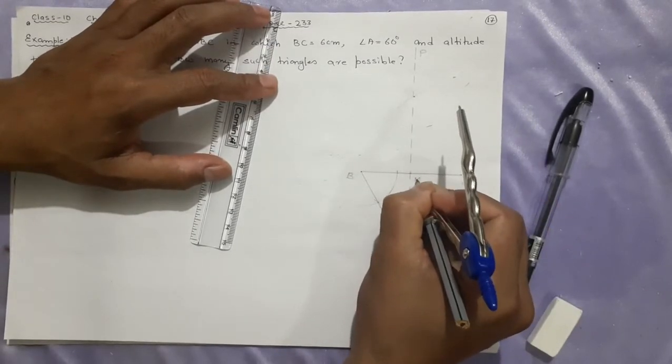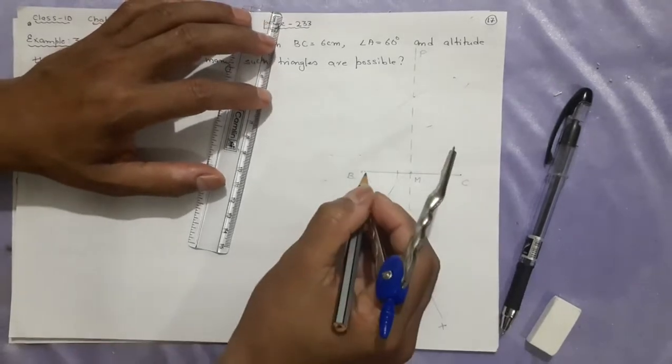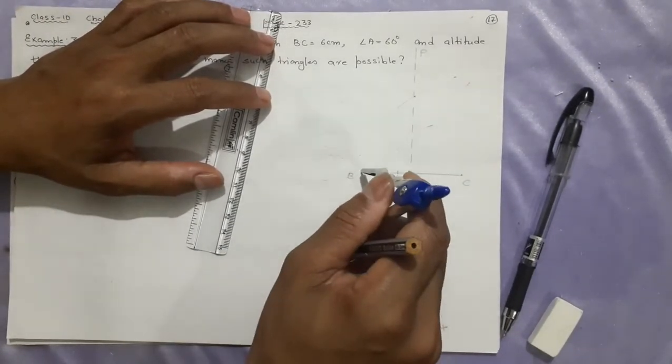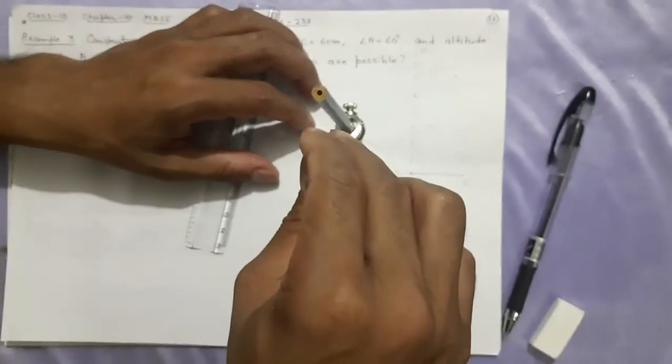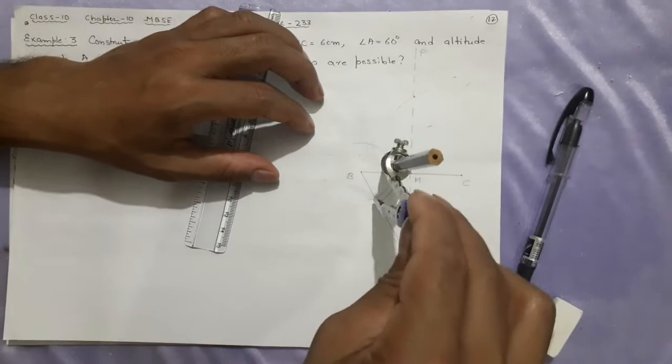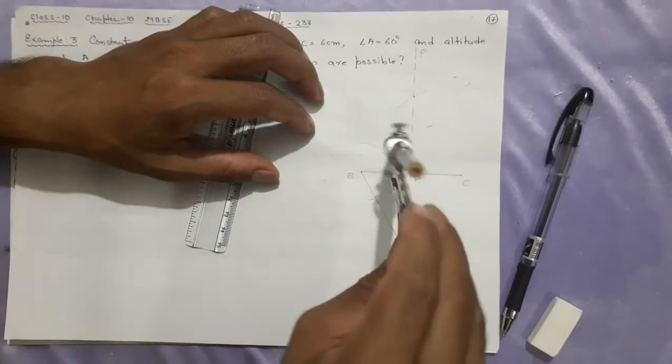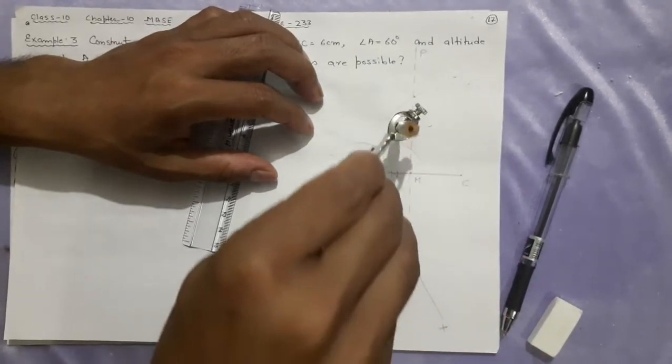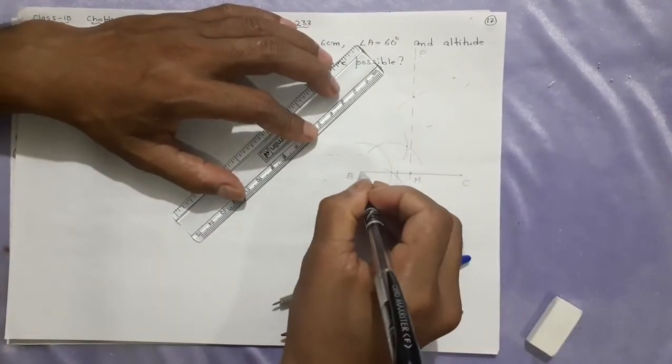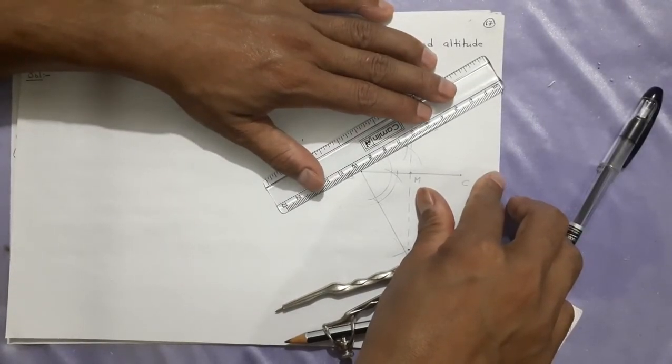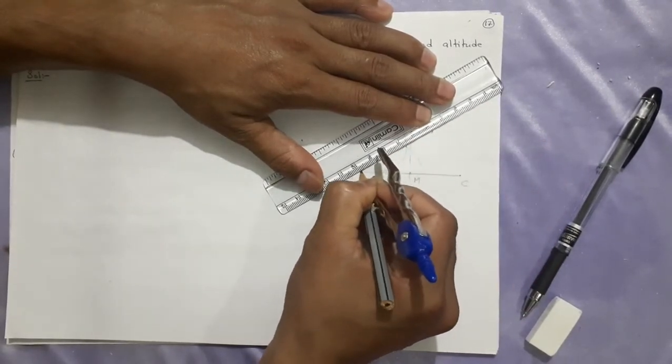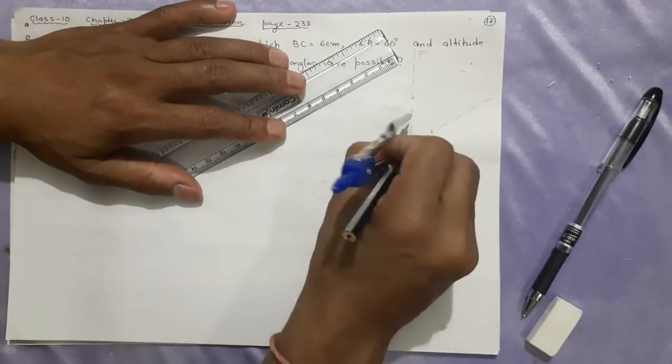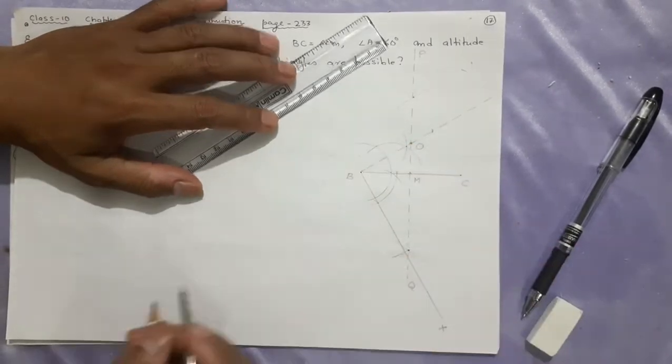Now next step is on this BX you will make perpendicular 90 degrees. How? Making 90 degrees is not difficult. This one, same arc. See, two, three, four. Now joining this to this will be 90 degrees. This is the most confusing part. Most of the time they make mistakes here.